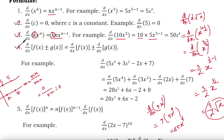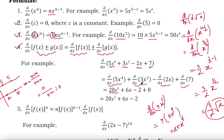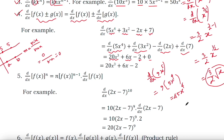Formula 4: if you have two functions in addition or subtraction form, you can differentiate them separately. For example, the derivative of 5x to the power 4 plus 3x squared minus 2x plus 7 gives: 20x cubed plus 6x minus 2 plus 0. Note that the derivative of 2x equals 2 because the derivative of x is 1, so 2 times 1 equals 2.